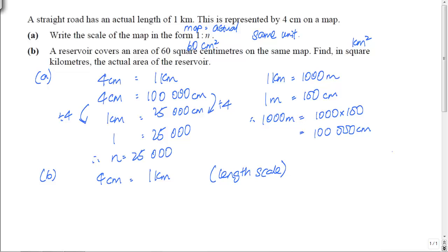And how do we do that? Very easy. You just need to square both sides. So when I square both sides, let me show you the squaring. That will give us 16 cm² is to 1 km². And at this point of time, this will no longer be my length scale. I have to change it to call it my area scale.